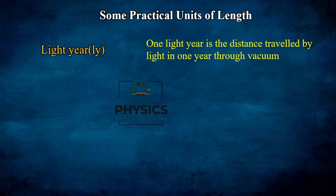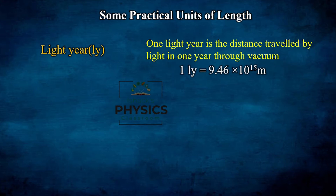In vacuum, light travels at maximum speed. In other media such as water, glass, and diamond, the refractive index changes the velocity of light. To calculate one light year: speed equals distance divided by time, so distance equals speed multiplied by time. Speed is 3 × 10⁸ m/s and time is 365 days converted to seconds.